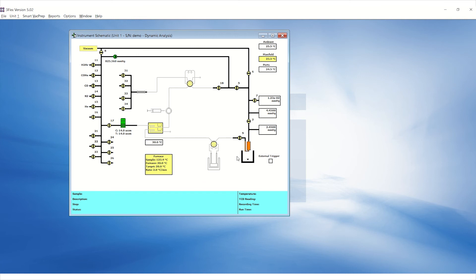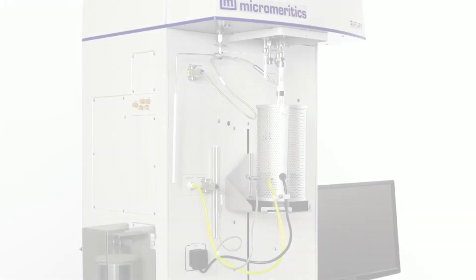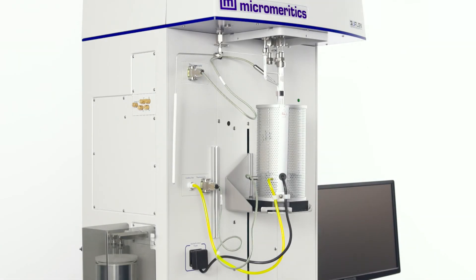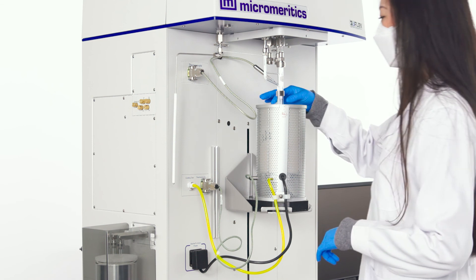Right click on the elevator icon on the schematic and click raise. Once the elevator is fully raised and stopped, check that the thermocouple is still in position.